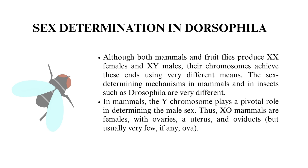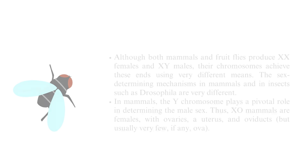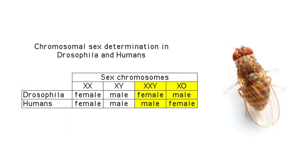In mammals, the Y chromosome plays a pivotal role in determining the male sex. Thus, XO mammals are females, with ovaries, a uterus, and oviducts. In Drosophila, sex determination is achieved by a balance of female determinants on the X chromosome and male determinants on the autosomes.